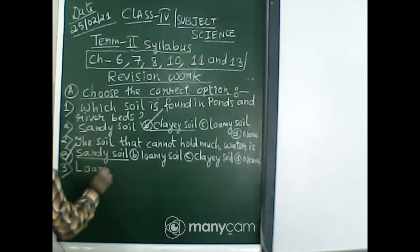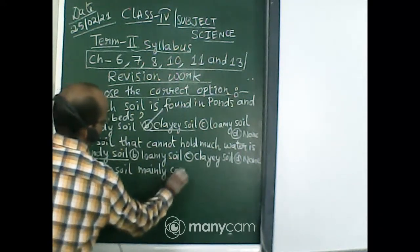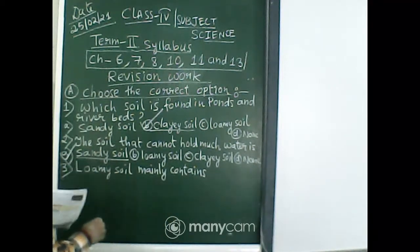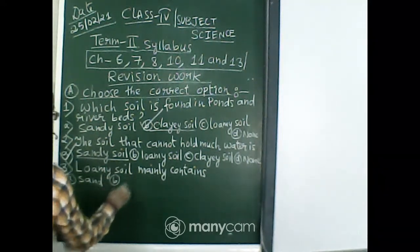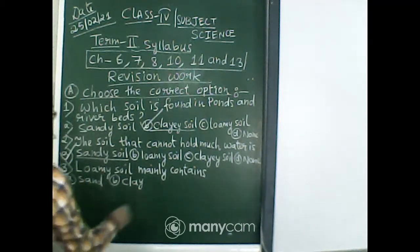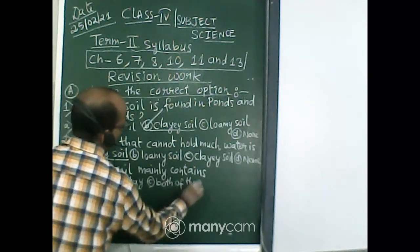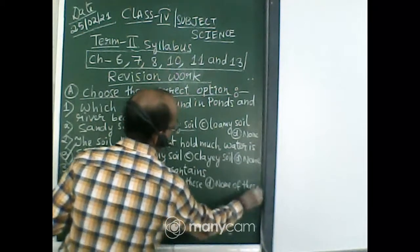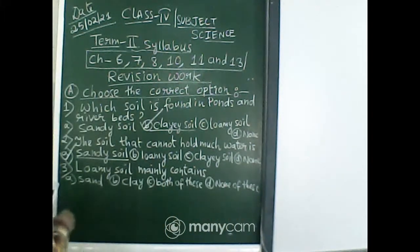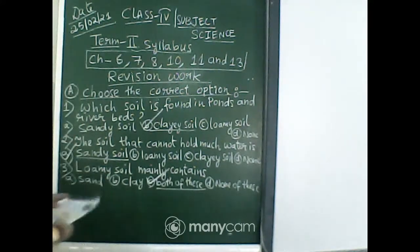Question number three: Loamy soil mainly contains? Options are: A) Sand, B) Clay, C) Both of these, and D) None of these. Loamy soil mainly contains sand and clay — both of these. Option C is the correct answer.